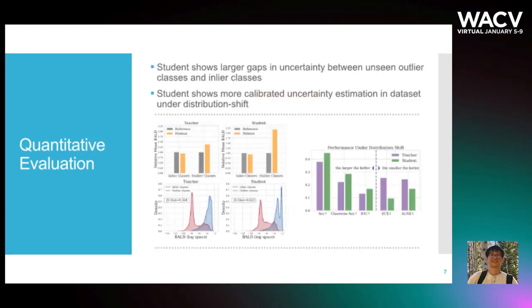Moreover, the student shows larger gaps in uncertainty between unseen outlier classes and inlier classes than the MC Dropout teacher. The student also shows more calibrated uncertainty estimation and better predictive performance in datasets under distribution shift. This is actually critical for real applications like self-driving cars to handle rare scenes.